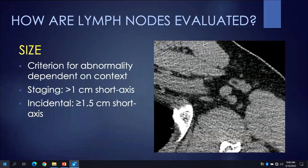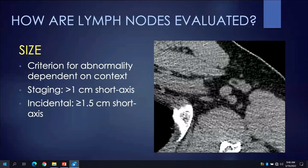How are lymph nodes evaluated? The first characteristic we look at is size, and the criterion for abnormality is dependent on the clinical context. In patients with a high pretest probability of clinically important nodal disease — for example, a patient with known primary lung cancer — we would use a short axis size criterion of greater than one centimeter.